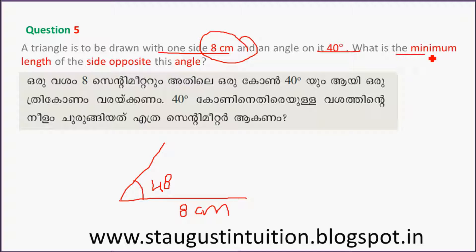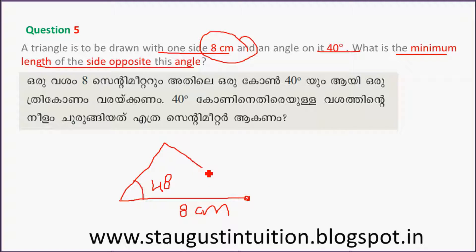What is the minimum length of the side opposite to this angle? This side is 8 cm. This is the minimum length of the side opposite to this angle.